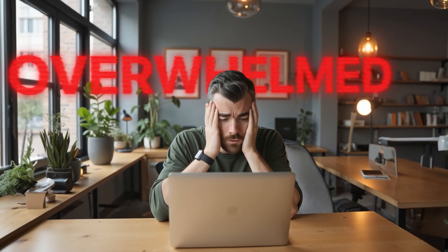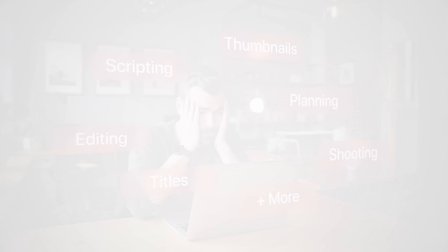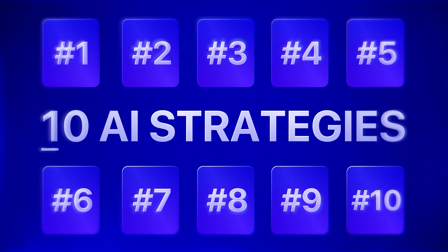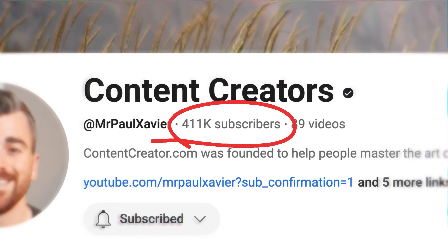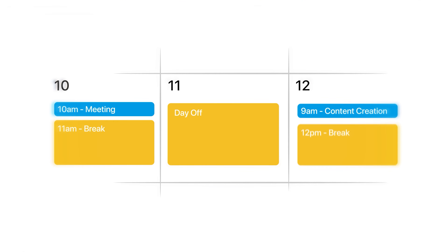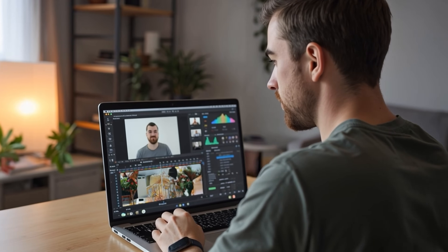If you want to start a YouTube channel but feel overwhelmed with the planning, scripting, titles, thumbnails, shooting, editing, and everything else involved, this video will change everything for you. You're going to learn 10 beginner-friendly AI strategies that we've personally used to grow our channel to over 400,000 subscribers while working faster and more efficiently than ever. With these AI strategies, you're going to have a lot more fun creating content. Let's dive in.